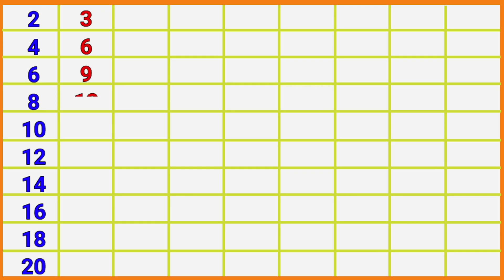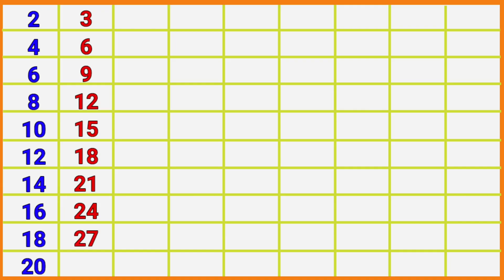3 1s are 3, 3 2s are 6, 3 3s are 9, 3 4s are 12, 3 5s are 15, 3 6s are 18, 3 7s are 21, 3 8s are 24, 3 9s are 27, 3 10s are 30.